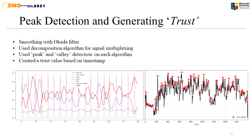After we get the 1D movement signals, we used a smoothing filter for smoothing the signals and then used five different decomposition algorithms for signal processing. For each resulting signal, we used a peak detection technique to find the peaks and valleys for each algorithm. Then we created a trust value based on the timestamp. For example, if three out of the five algorithms said that there is a peak or valley at a particular point, then we considered that to be a beat point.